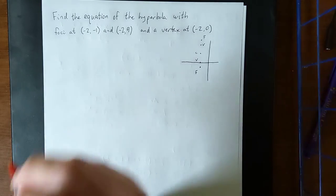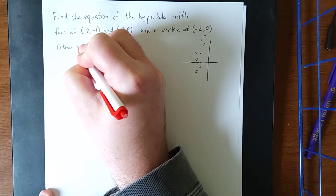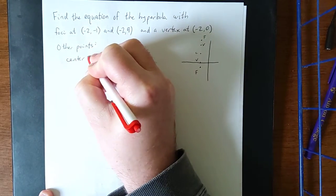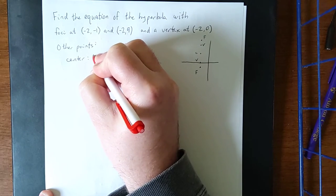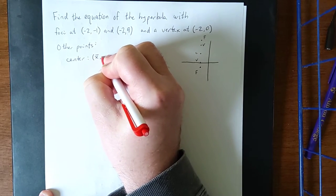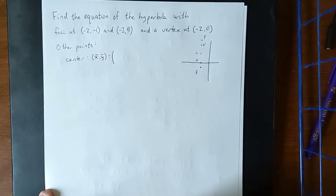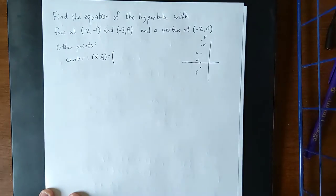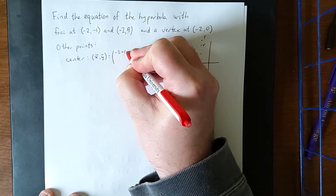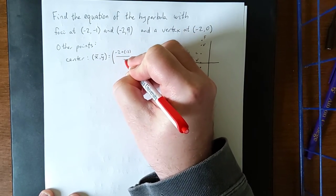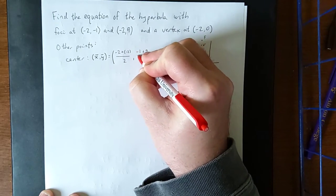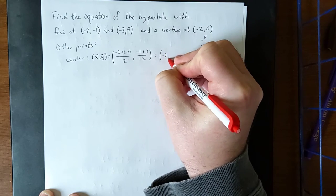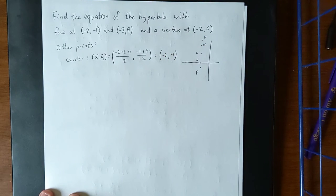So as far as the other points are concerned, the center is going to be located at the midpoint between the two foci. We're going to use the midpoint formula to find that. That'll be (-2 + -2)/2, and also (-1 + 9)/2. That midpoint is going to be (-2, 4) after we simplify each of those.